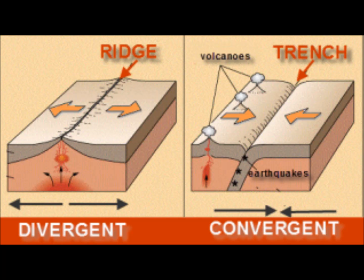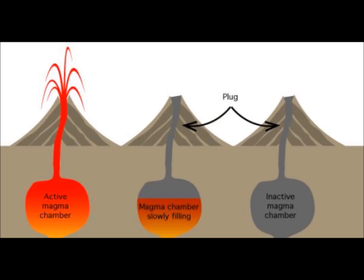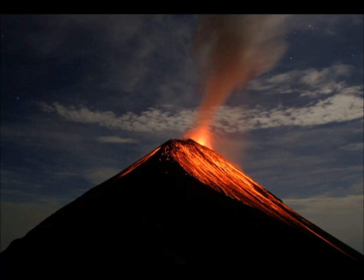Volcanoes have three stages: active, dormant, or extinct. Active means it has erupted in recent years. Dormant means it really hasn't erupted recently, but it may. And extinct — it's just dead, never going to erupt ever again.